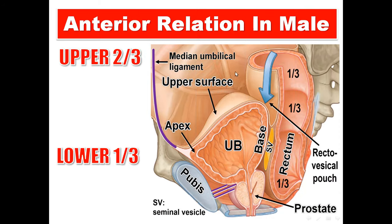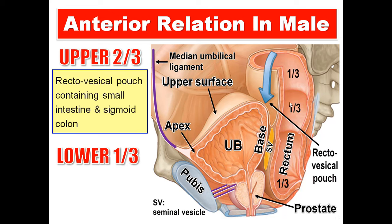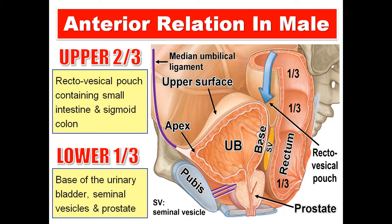Regarding the anterior relations in the male: the upper two-thirds are related to the rectovesical pouch, which contains small intestine and sigmoid colon. The lower third is related to the base of the urinary bladder, the seminal vesicles, and the prostate gland.